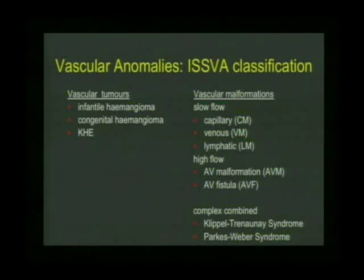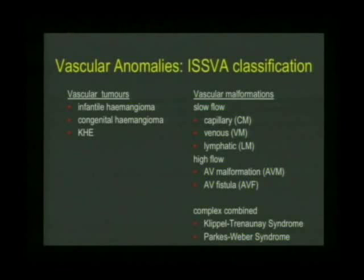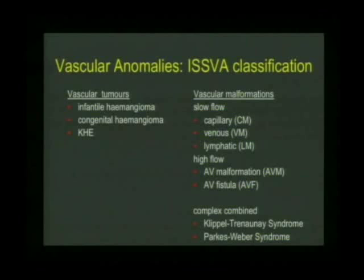From a practical standpoint, it is very useful to divide vascular malformations into slow flow and high flow. Slow flow includes capillary, venous, and lymphatic malformations, while high flow includes arteriovenous malformations and arteriovenous fistulae.